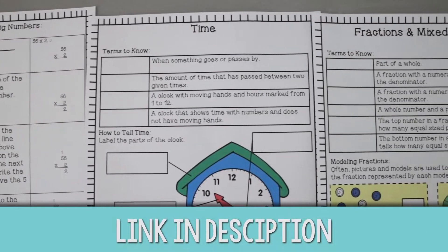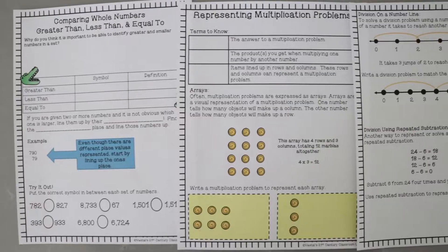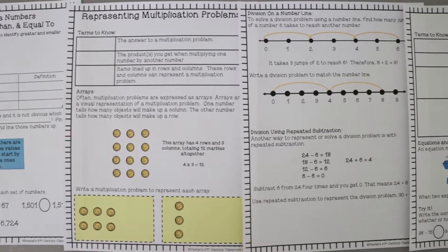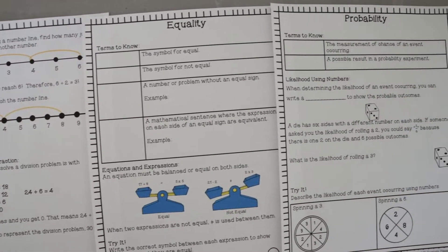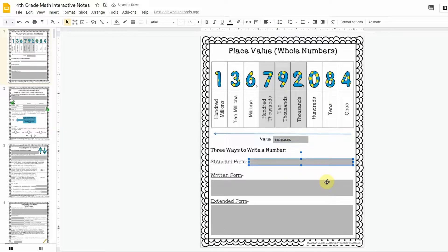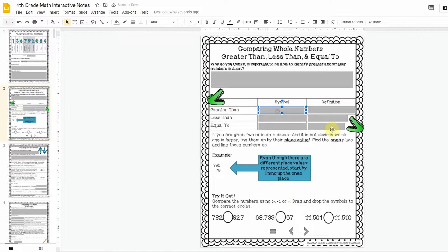To show you how to use the grab image text feature, we're gonna use a page from my math interactive notes. My math interactive notes cover math skills for the entire school year and include vocabulary, step-by-step instructions, visual aids, and practice problems. Each bundle includes interactive notes in both PDF and digital formats for all learning environments. Versions are available for third, fourth, and fifth grades, and they're linked down in the description.